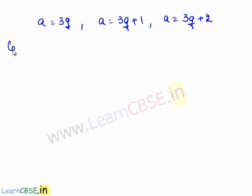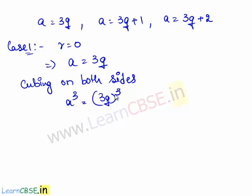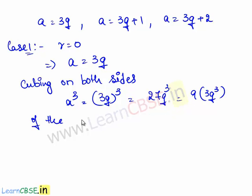Consider the first case where r equals 0. This implies a equals 3q. Cubing both sides, we have a cubed equals (3q)³ which is 27q³. 27q³ can be written as 9 times 3q³. This is of the form 9m where m equals 3q³.